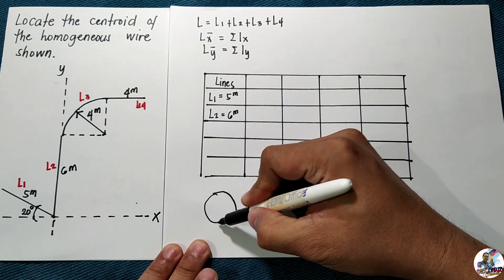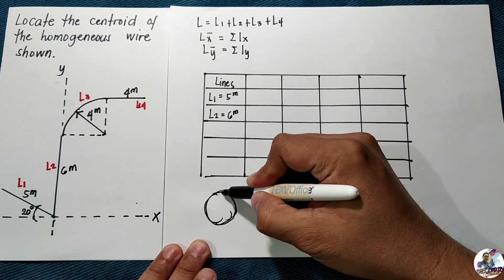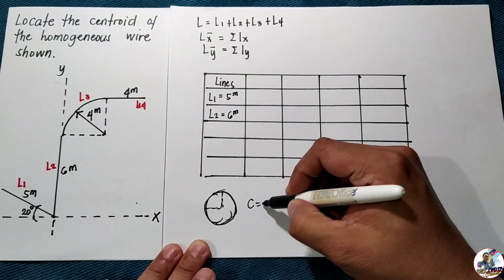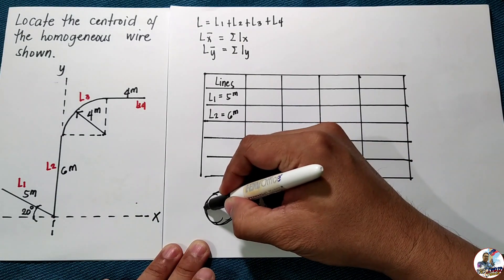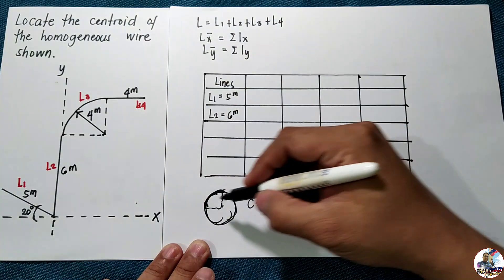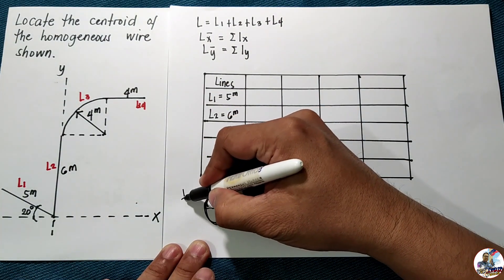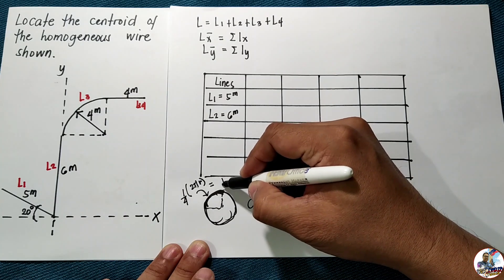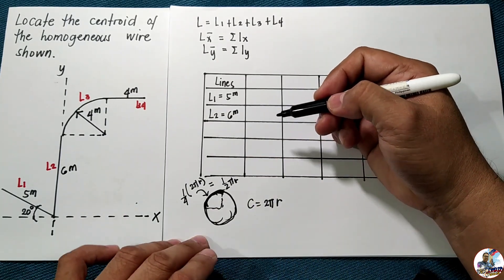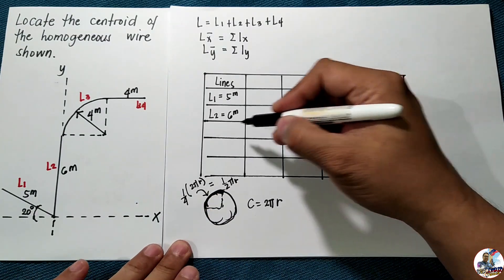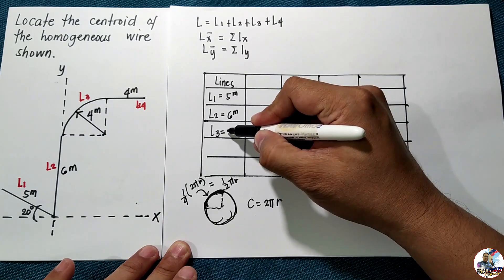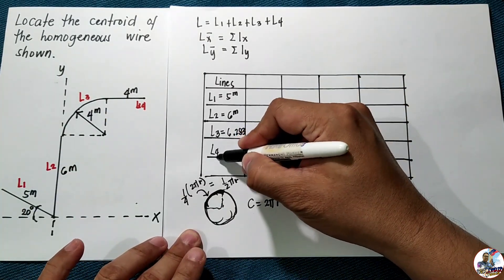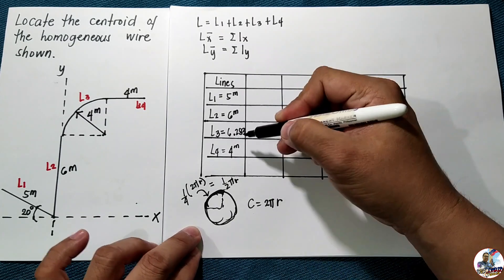Considering the circle, the full circumference is two pi r, and the portion we have is one-fourth of that, giving one-half pi r. Substituting the radius of four meters, L3 equals 6.283 meters. L4 equals four meters.